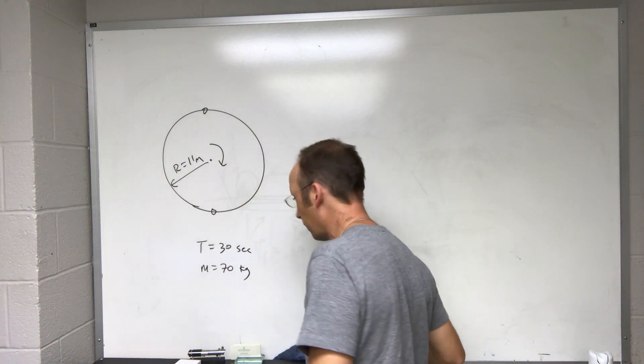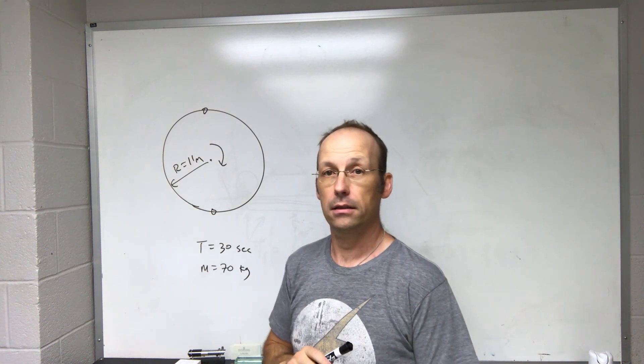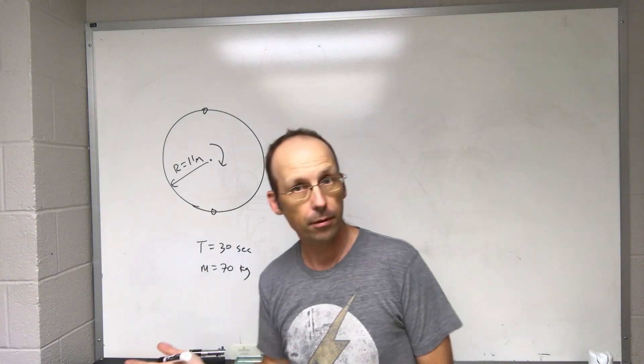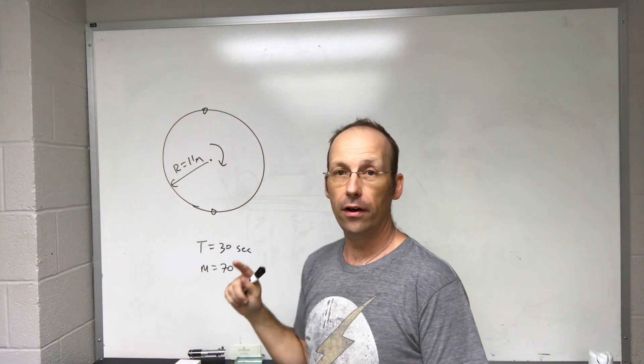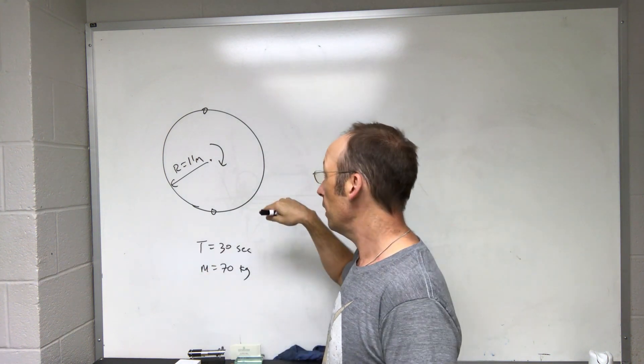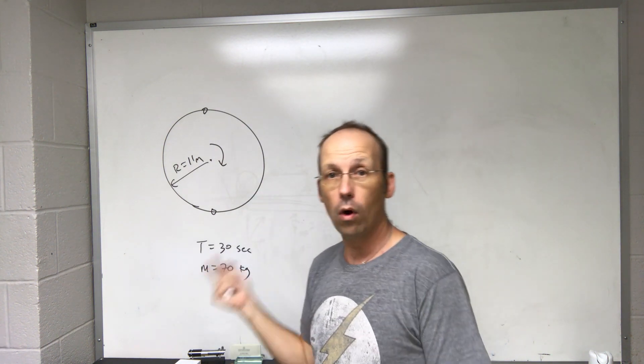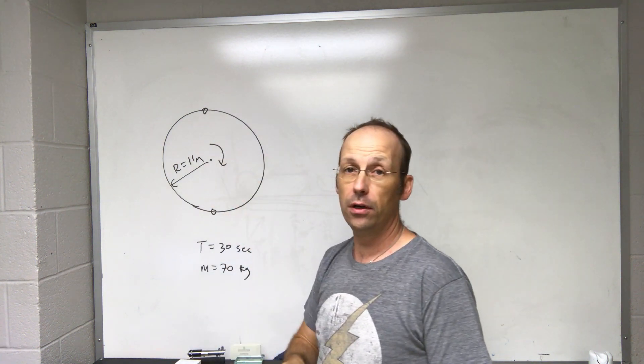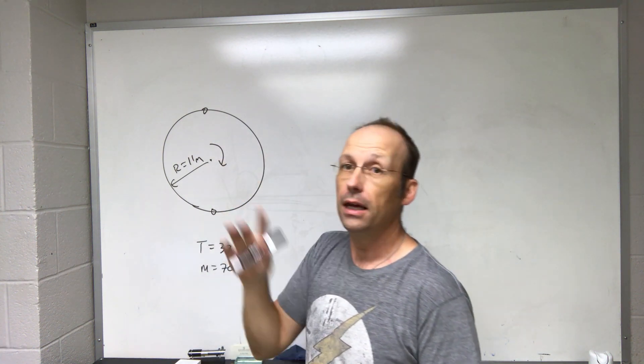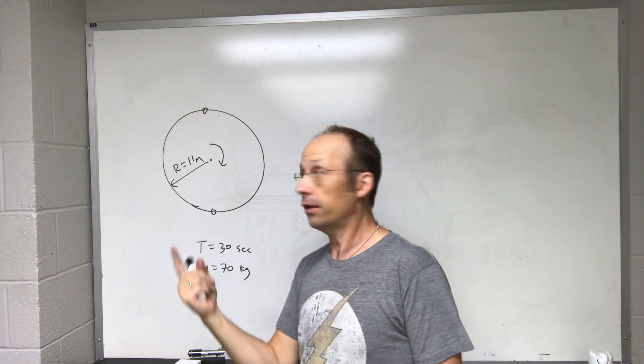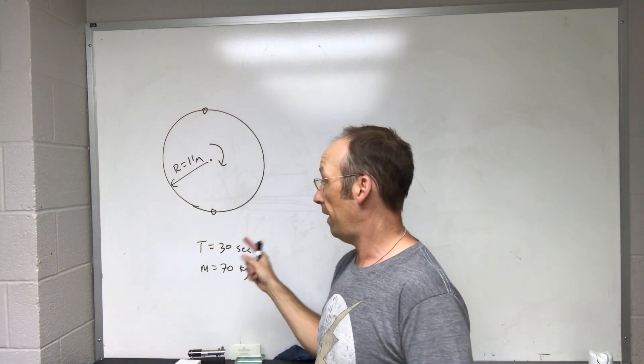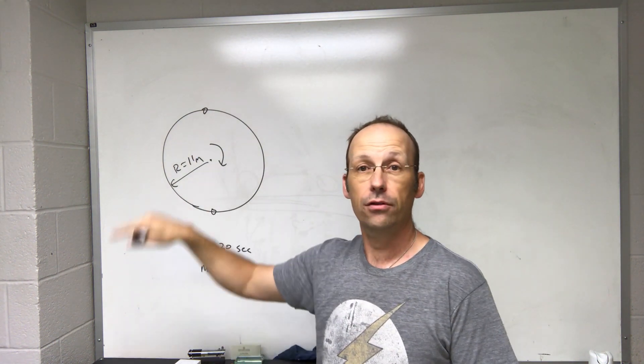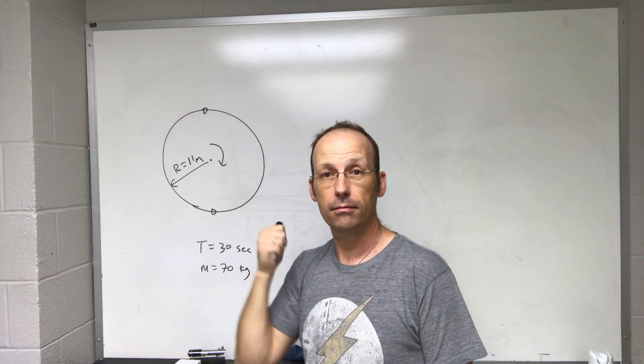Okay, so here's the problem. I gave this problem in class and I think it's a pretty good problem. You have a Ferris wheel spinning around, and the question is: what is the apparent weight of the person at the top of the Ferris wheel? What's the apparent weight at the bottom? In this particular case, the Ferris wheel has a radius of 11 meters, the mass of the person is 70 kilograms, and it takes 30 seconds to go around.